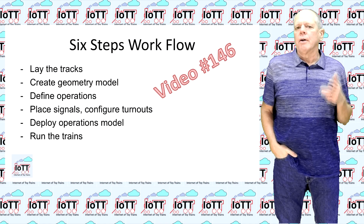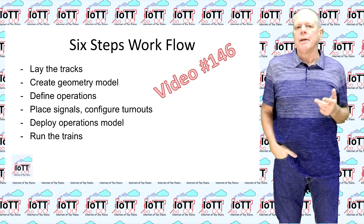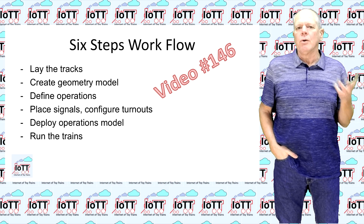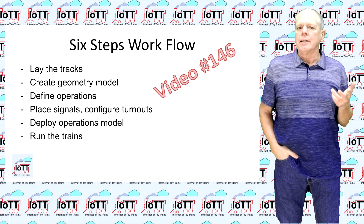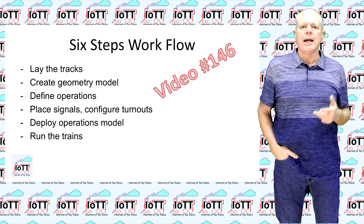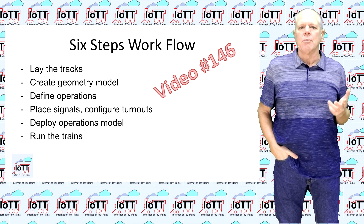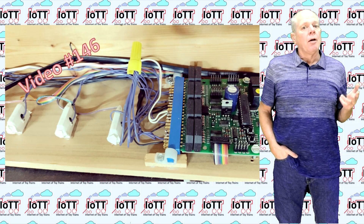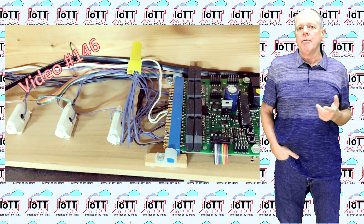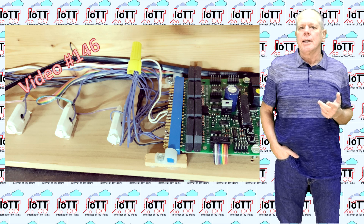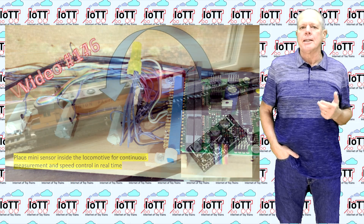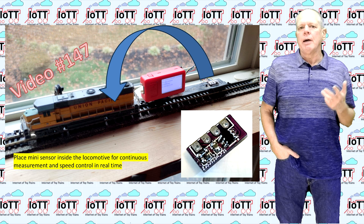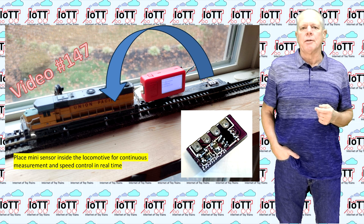In videos number 146 and 147, I explained my broader vision of doing train localization using a train-side distance sensor and getting rid of a large number of track-side sensors like block detectors. Part of that work is coming up with a locomotive decoder that has an onboard distance sensor that can be used to measure the travel distance as well as the speed of the locomotive.